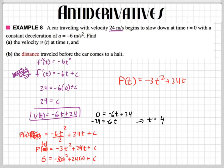So it takes four seconds for it to come to a stop and I plug in four there. So I get negative three times sixteen plus twenty-four times four is ninety-six. Is that right? I think so, yes. And so what do I get? What is that answer? That would be negative forty-eight plus ninety-six which equals forty-eight. Forty-eight meters is how far it goes.